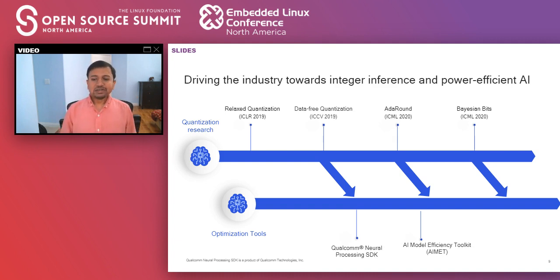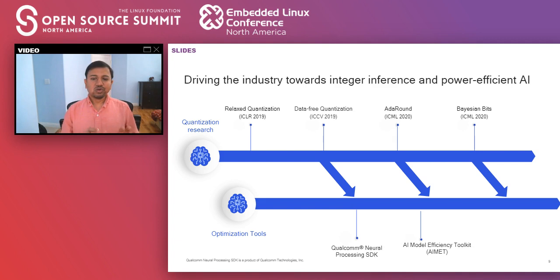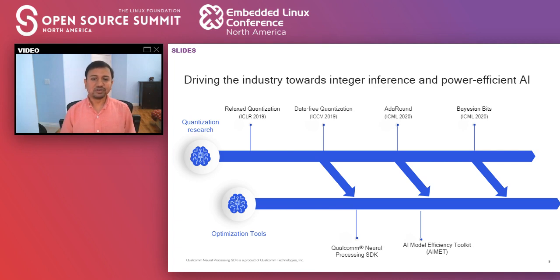At Qualcomm AI Research, we've been doing a whole bunch of research on quantization techniques. You'll see some papers there, including very novel techniques called AdaRound and BRECQ that are coming up at ICML. We've been publishing research to help not just ourselves, but everybody in the industry. Now we are also trying to take these techniques and make them available through tools, so it's easier for someone to just use the tool instead of reading a paper and implementing the math themselves.